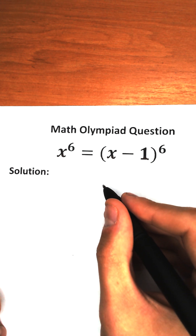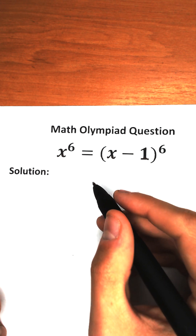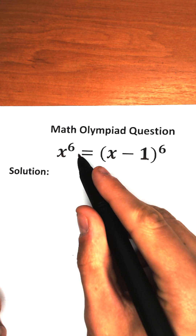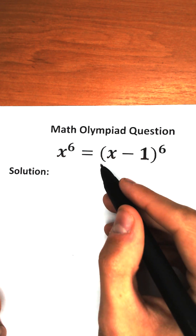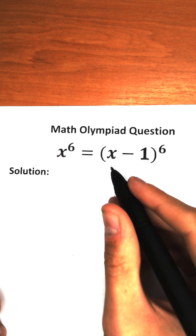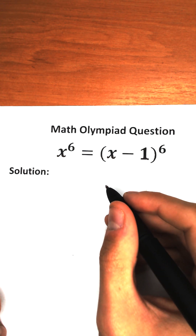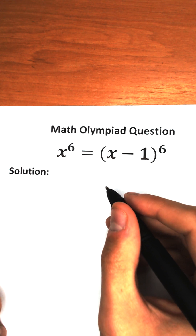Welcome back to my channel, Higher Mathematics. Today we have a really interesting equation: x to the sixth power equals x minus one to the sixth power. In this video I'm going to fully explain how to solve this correctly, step by step.